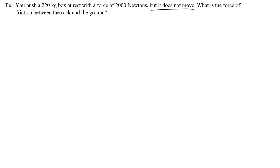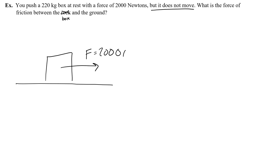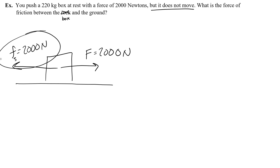Word problem: you push a 220-kilogram box at rest with a force of 2,000 newtons, but it does not move. What is the force of friction between the box and the ground? Since it's at rest and doesn't move, in order for the net force to be zero, friction also has to be 2,000 newtons. It's not moving, so we call this static friction. The static force of friction is 2,000 newtons.